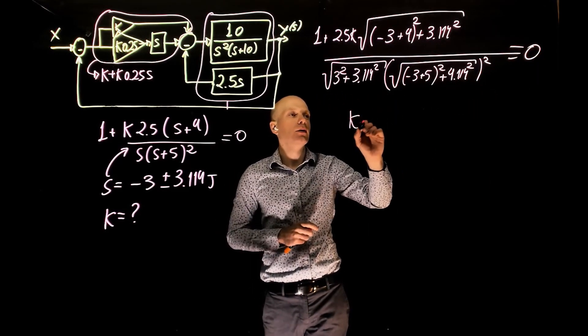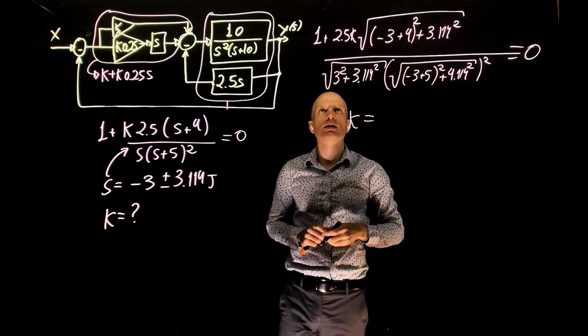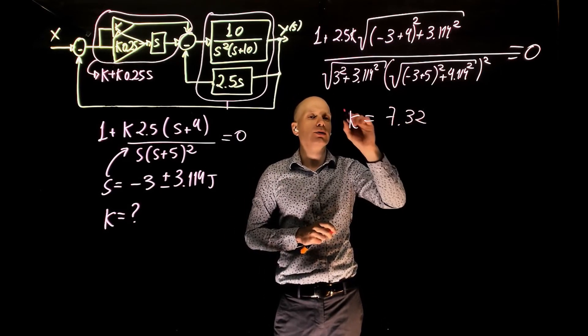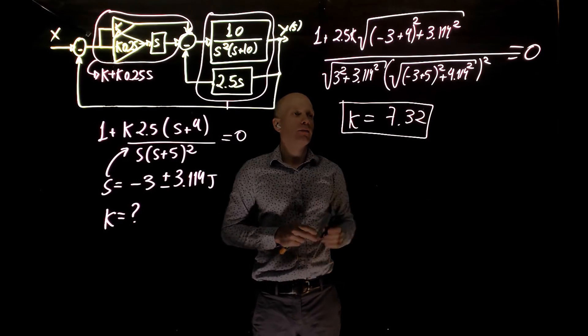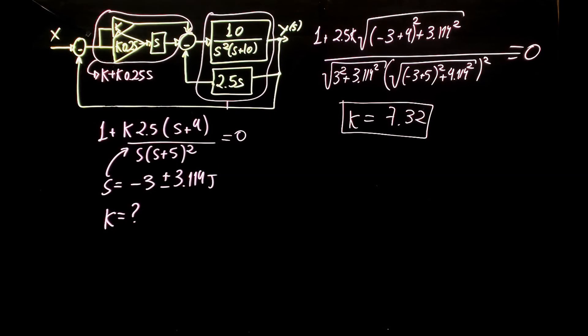We can now simply solve for k, the simple math, and k is 7.32.